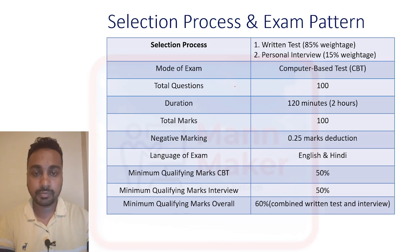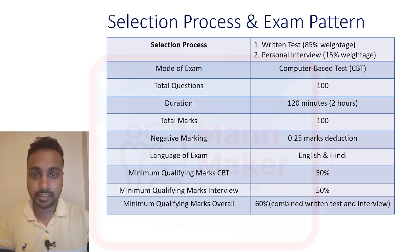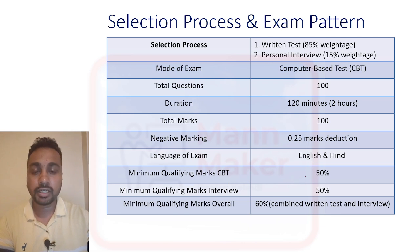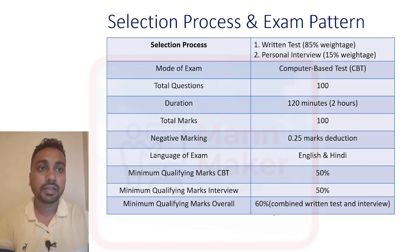The mode of exam will be CBT — no paper will be there for the written exam. Total questions will be 100 and you will get two hours. Total marks is 100 and negative marking is also there — 0.25 mark reduction for negative marking. The language of exam will be English and Hindi. Minimum qualification for CBT is 50%, and for the interview also you need to score at least 50%. Overall, you will have to cross 60% for both written and interview to be selected.